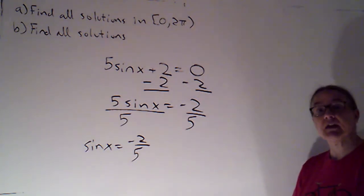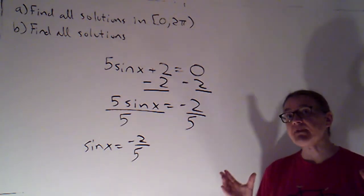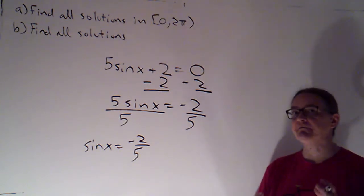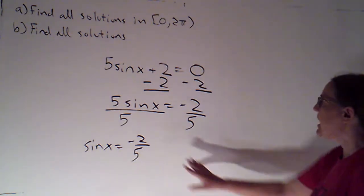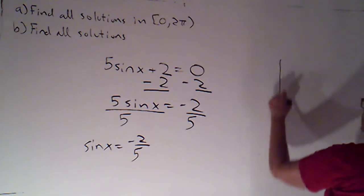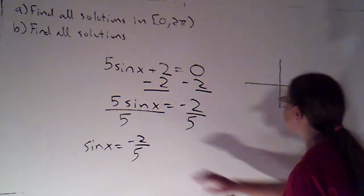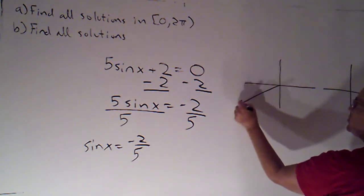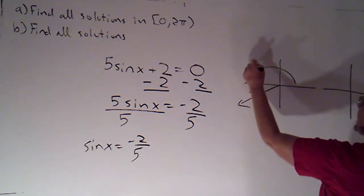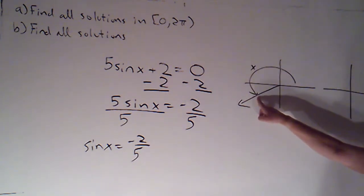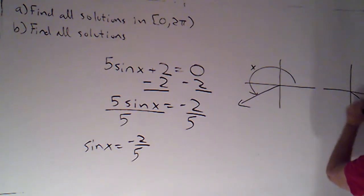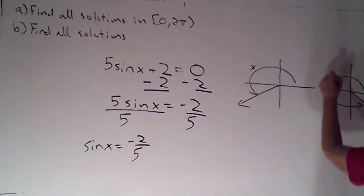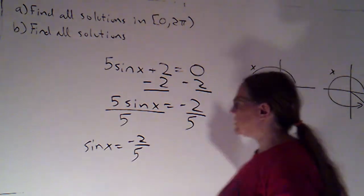So here we're going to have to describe that reference angle using inverse trig. Okay, so I'm going to look at this. That's a negative number. So I know that sine is negative in two quadrants. So it's negative in quadrant 3, so I'll have an angle that looks like this. And it's negative in quadrant 4, so I'll have an angle that looks like that.